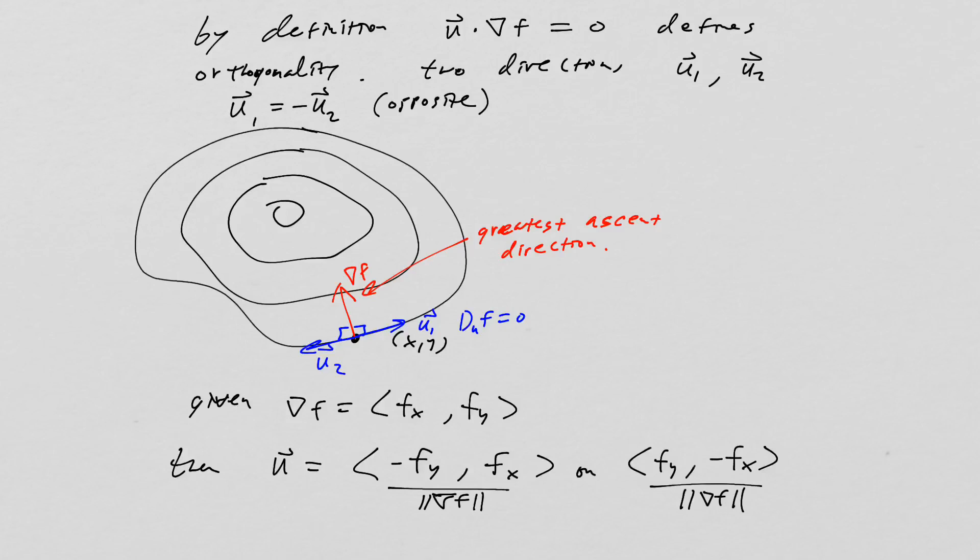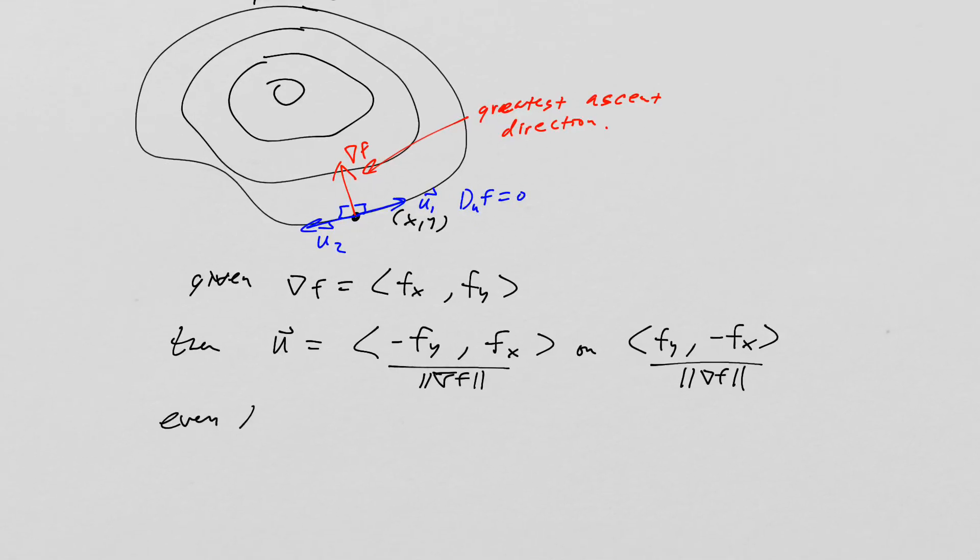But now we've now proven this really neat fact about level curves. So it should be that every level curve tangent is orthogonal to grad f at every point where grad f is defined and the level curve is defined. So by putting all that together, we have that. So now, let's go and just do a simple example.